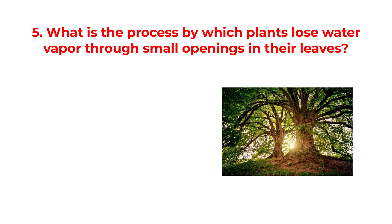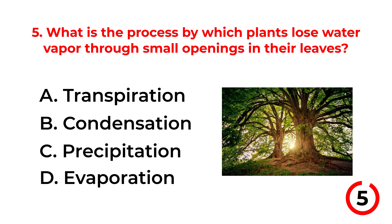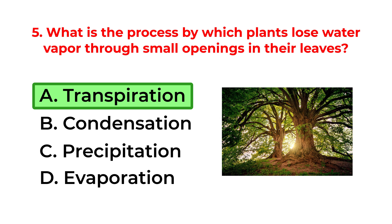What is the process by which plants lose water vapor through small openings in their leaves? A. Transpiration. B. Condensation. C. Precipitation. D. Evaporation. The correct answer is option A: Transpiration.